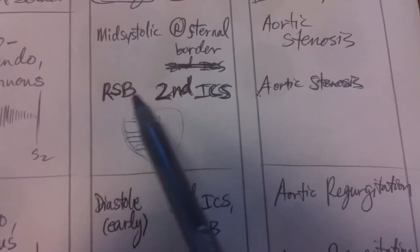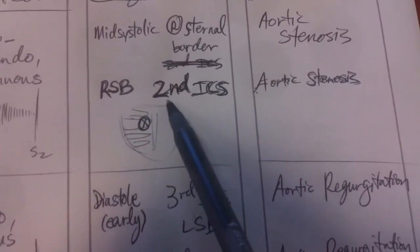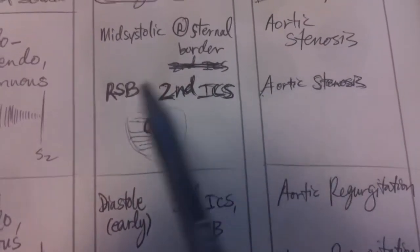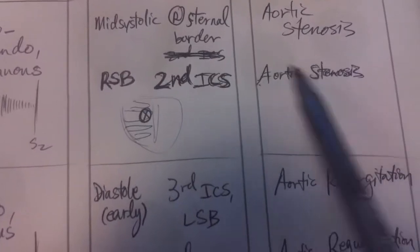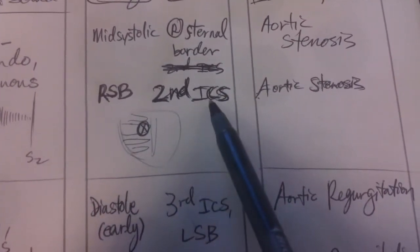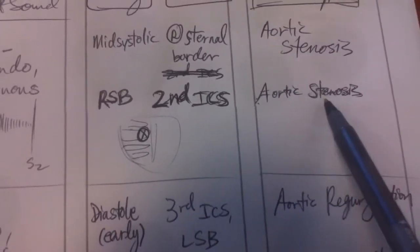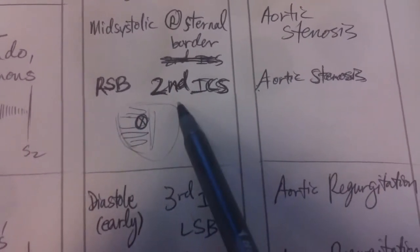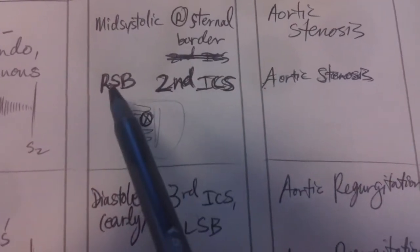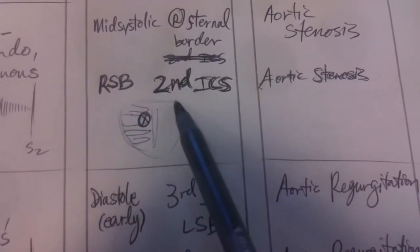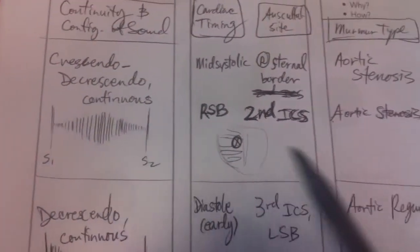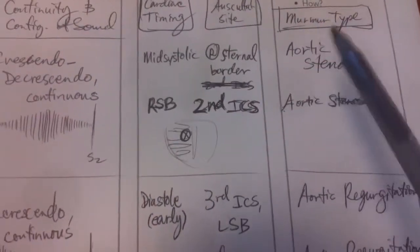So to reinforce: run second base — second intercostal space, aortic stenosis. SSS: run second base, second stenosis. Mid-systolic, crescendo-decrescendo — that's how you remember this murmur type.